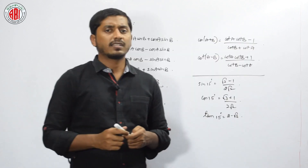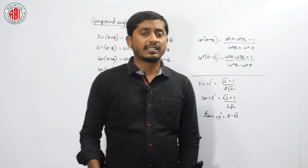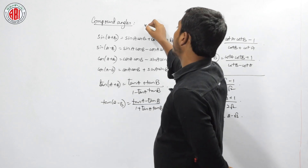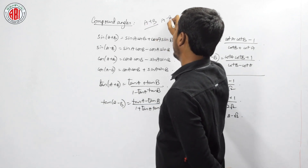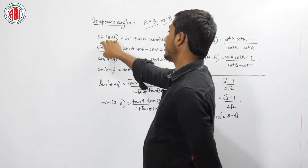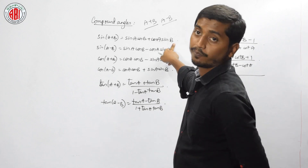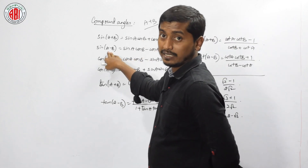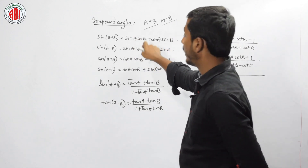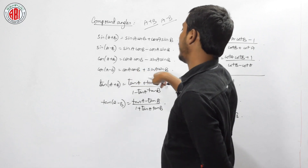Now let us go to our next topic: compound angles. When are angles said to be compound? Till now we have seen only single angles; here we will have a combination of two angles — either a plus b or a minus b. The formulas are: sin(a + b) = sin a cos b + cos a sin b; sin(a − b) = sin a cos b − cos a sin b. Cos(a + b) = cos a cos b − sin a sin b; cos(a − b) = cos a cos b + sin a sin b.